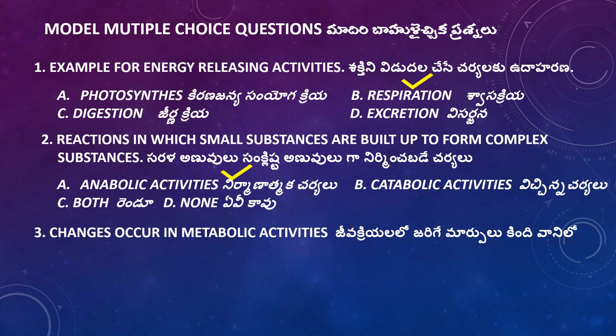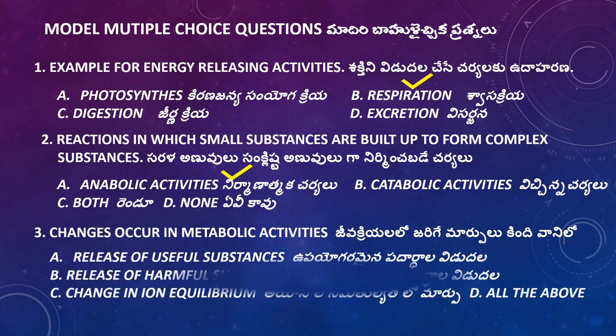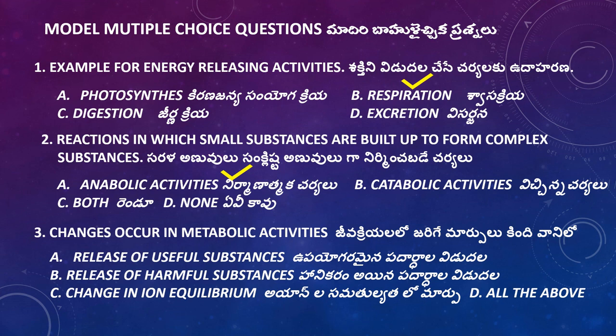Question: Which changes occur in metabolic activities? Options: Release of useful substances, Release of harmful substances, Change in ion equilibrium, All of the above. Since all three types of changes may occur during metabolic activities in our body, the right answer is All of the above.